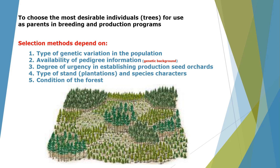If you have pedigree information — that is, information about the genetic background of the species, variety, or stand — that also helps. The degree of urgency in establishing production seed orchards matters too: if you don't have a lot of time, don't rush into such a project because it takes time for trees to grow and produce results. Also, knowing the type of stand or species characters makes it easier to select suitable trees.